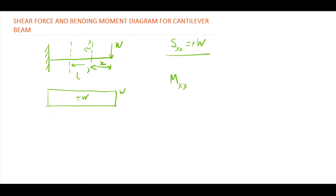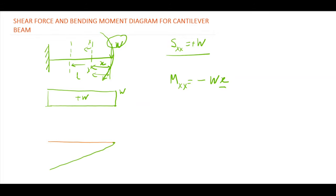For the bending moment at section XX, it equals the algebraic sum of all moments due to external loads. We have only W acting at distance x from the section, so moment = W·x. The sign is negative because the direction is clockwise on the right-hand side. On the bending moment diagram, at the free end where x = 0, BM = 0; as x increases the moment increases, reaching minus W·L at the fixed end.